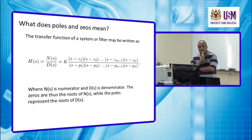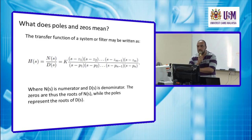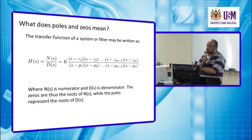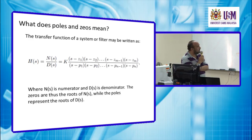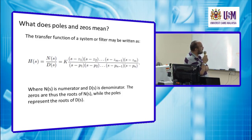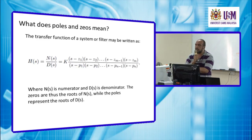We mentioned poles and zeros — let's define what they mean. Poles and zeros are means of representing the so-called transfer function. A transfer function is a representation of the response of the filter, and we can also use it to apply the filter in the frequency domain. The transfer function for a system is composed of a numerator N(s) and a denominator D(s), multiplied by a constant K, which may represent the sensitivity or the gain of the filter.